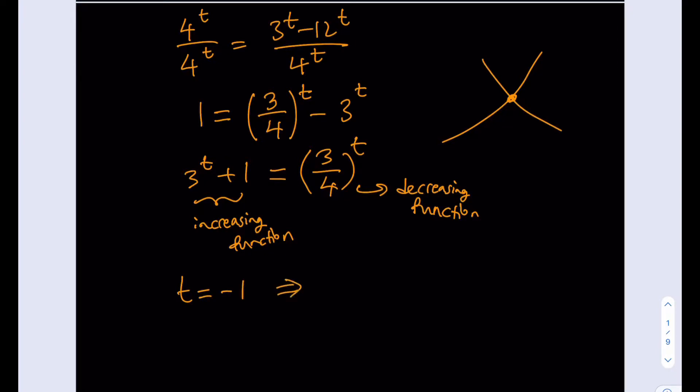Because if you replace t with negative 1, you're going to get 3 to the power of negative 1 plus 1 on the left-hand side and 3 fourths to the power of negative 1 on the right-hand side. This is equivalent to 1 plus 1 third, which is 4 thirds. And the reciprocal of 3 fourths is also 4 thirds. So, this checks.